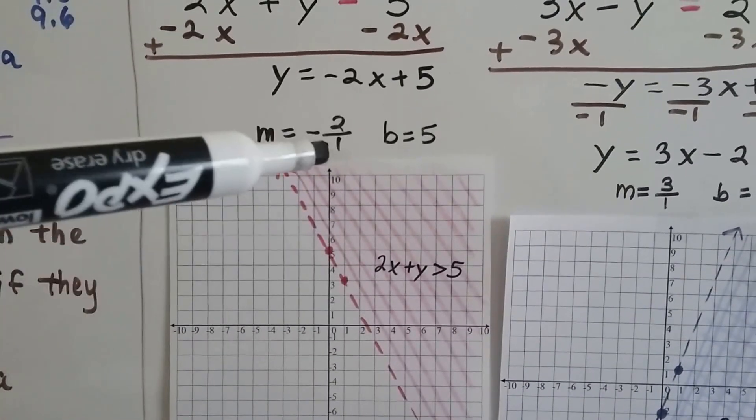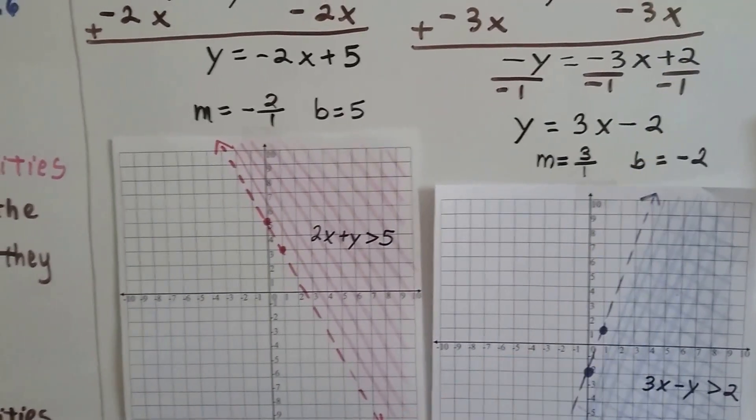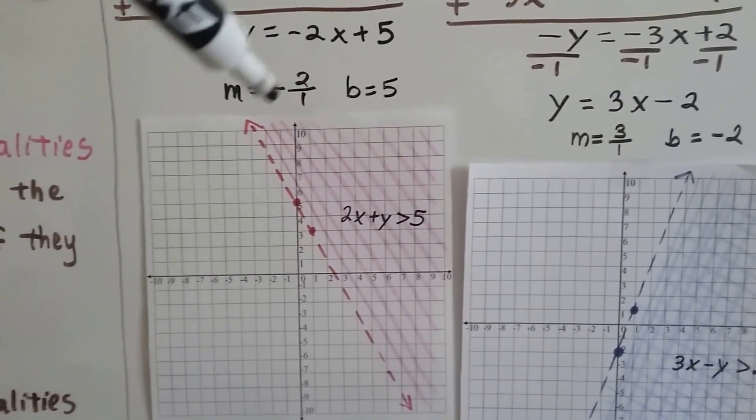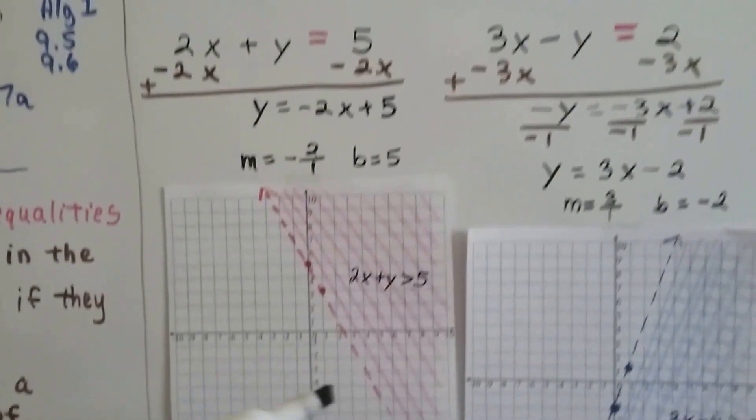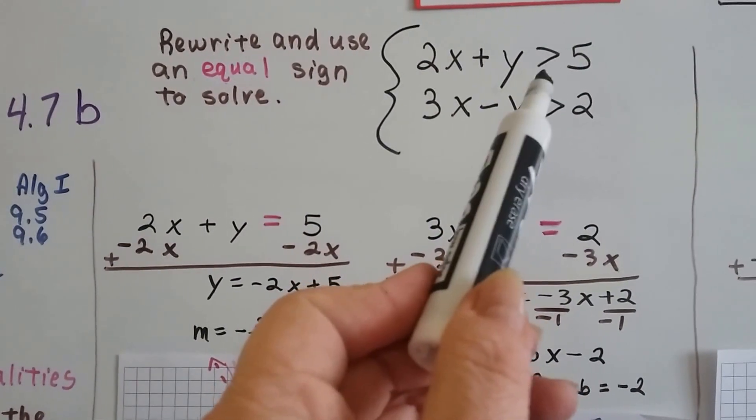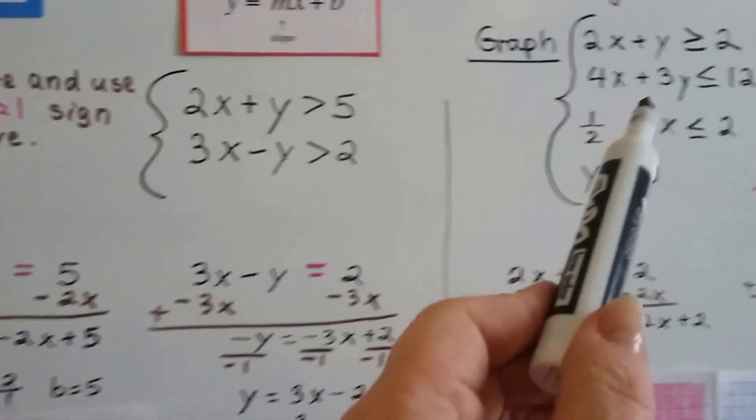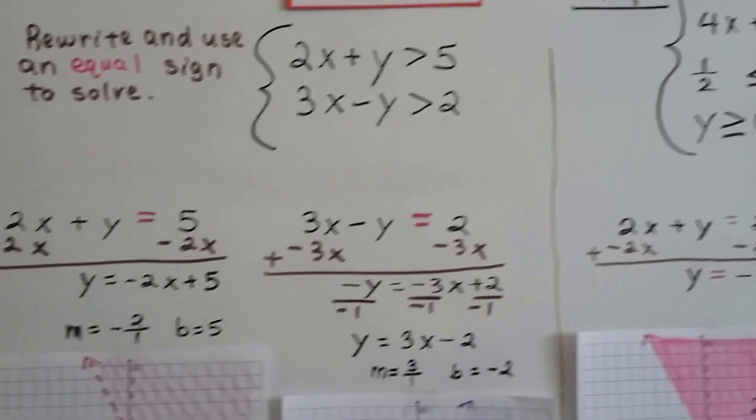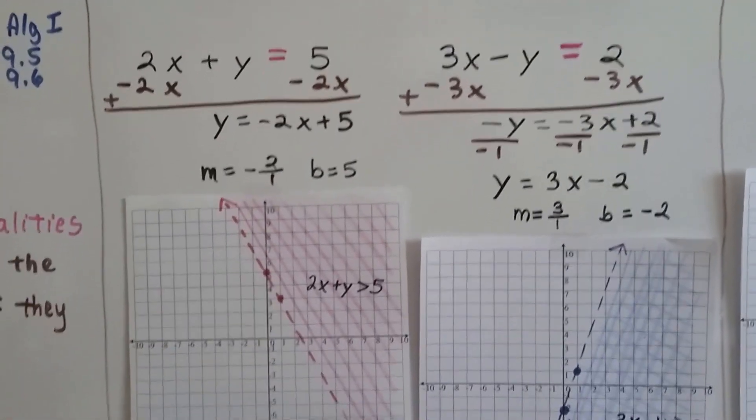We can graph this, and we graph the 5 right here. We put that point there, and we remember that a negative slope falls to the right. A positive slope rises to the right. So it's going to fall, and we're going to go down 2 and over 1. We draw our point there, and we draw our dotted line because it does not include the line. If it's just greater than, then it's going to be a dotted line. If it's greater than or equal to, or less than or equal to, because of that or equal to, then it's a solid line.